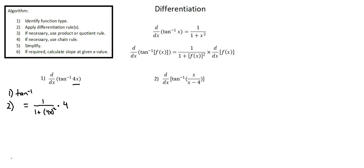5 simplify. We have 1 over 1 plus quantity 4x squared times 4. In the numerator we'll end up with 4 times 1 which is 4.